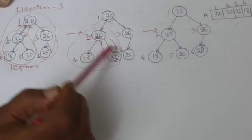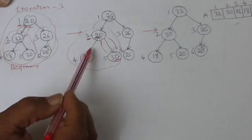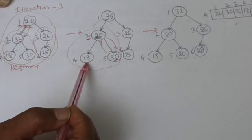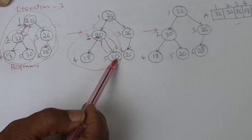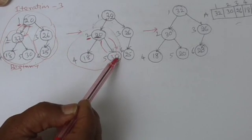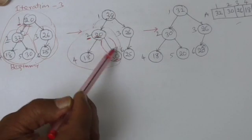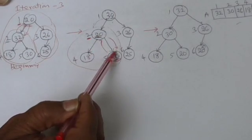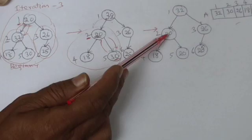So this node again you compare with its bigger of the two children. So 18 and 30, so 30 is the bigger one. So bigger of these two children, this 30 is bigger than the parent. Therefore it needs to be swapped up. So it is arranged.